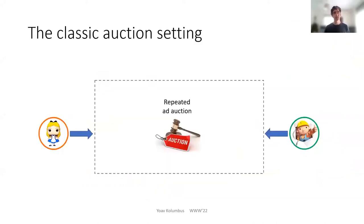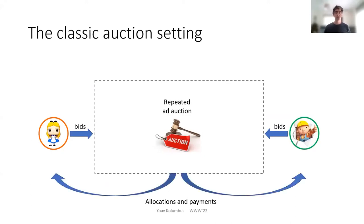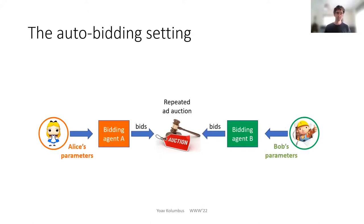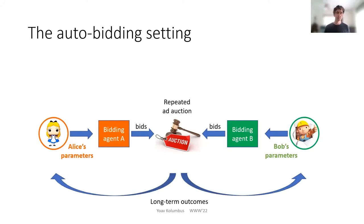To illustrate this, let's say that Alice and Bob are users in some online platform. In the classic auction setting, each one of them places a bid in every auction, and the auction returns the locations and payments. Alice and Bob have some utility. When we move to the auto-bidding setting, Alice and Bob define for their agents the maximum allowed bid, and the agents place bids in a series of auctions. Alice and Bob can observe the long-term outcomes and have some utility from these outcomes.